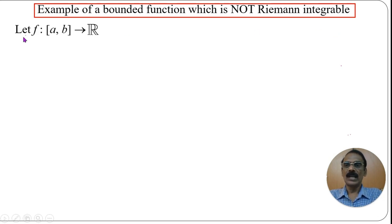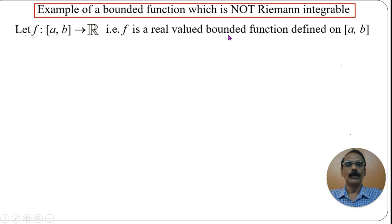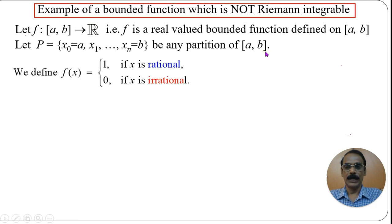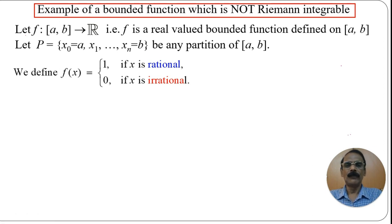Let us consider the function f from the closed interval [a, b] to ℝ, a real-valued bounded function defined on [a, b]. Let P be the partition with points x₀, x₁, ..., xₙ of the closed interval [a, b]. We define f(x) = 1 if x is a rational number — for example, 0, 1, 1/3, 2/5, or −3/8.